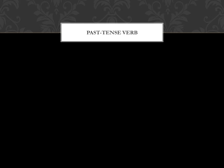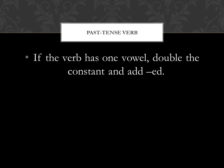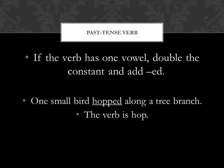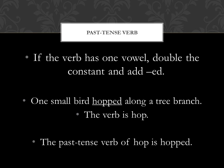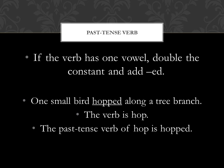Some verbs, we're going to double the consonant letter. If the verb has only one vowel, we're going to double the last consonant letter and then add -ed. For example, 'One small bird hopped along a tree branch.' The verb is hop, written h-o-p. It doesn't have a double p, but when we add -ed, we double the p — p-p — then -ed. So we double the consonant letter only for words that have only one vowel. The past tense of hop is hopped.